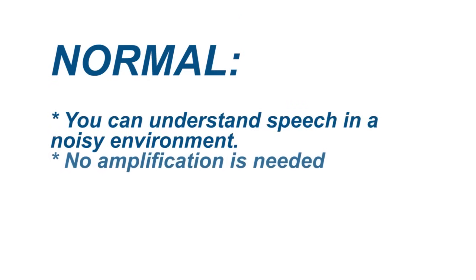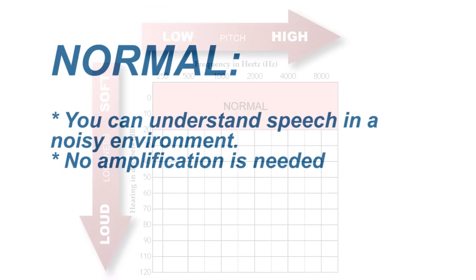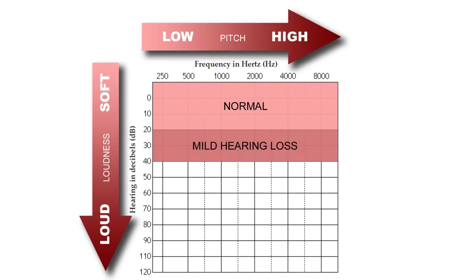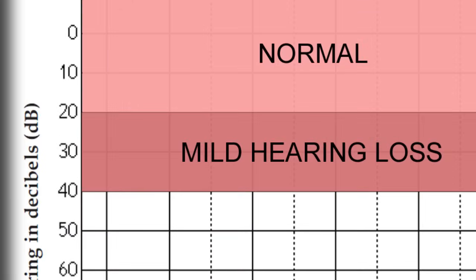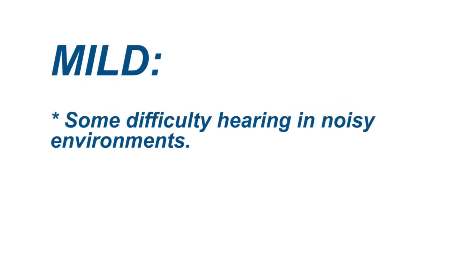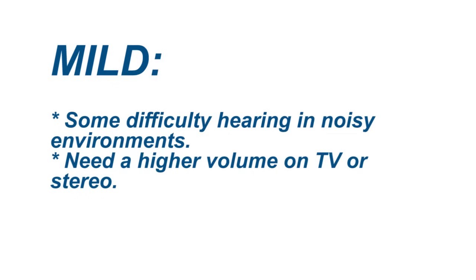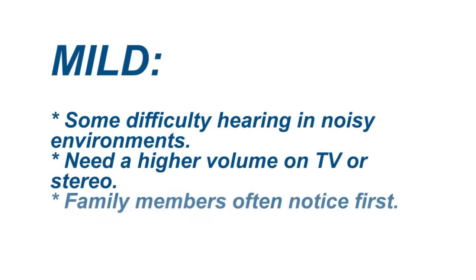If you have mild hearing loss, you will see the X or circle in the 20 to 40 decibel range. Mild hearing loss means you may be having difficulty understanding speech in noisy environments. It may also mean that you require a higher volume level when watching television or listening to the stereo. Because of this, family members are often the first to notice.